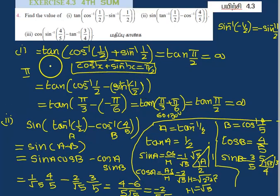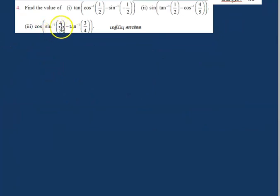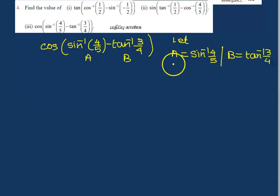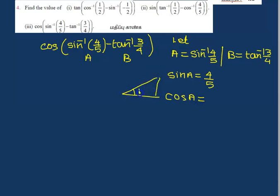Third sum: cos of sin inverse of 4 by 5 minus tan inverse of 3 by 4. Let A equal sin inverse of 4 by 5, B equal tan inverse of 3 by 4. We draw a right angle triangle for sin inverse of 4 by 5.